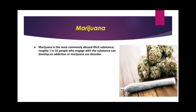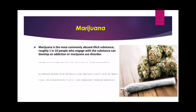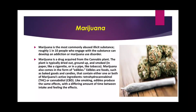The most common substance misused from Cannabis sativa is marijuana. It is an illegal substance, and roughly one in ten people who use it can develop an addiction or marijuana use disorder. Marijuana is a drug derived from the cannabis plant — the plant is typically dried out, ground up, and smoked. It can be packed in a cigarette or in a pipe, similar to tobacco.